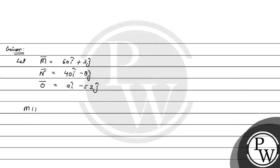First, let's find out the MN vector. MN vector equals vector N minus vector M. So we get 40 - 60 = -20i, and -8 - 3 = -11j. So MN vector is -20i - 11j.